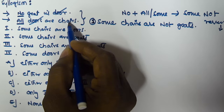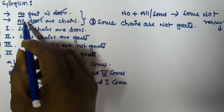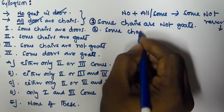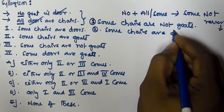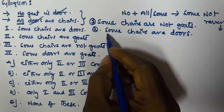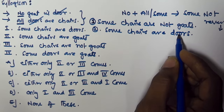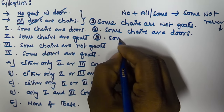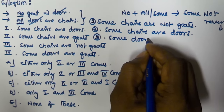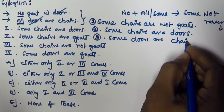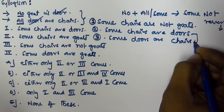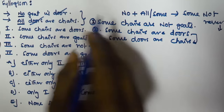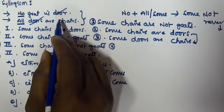From the second statement alone — all doors are chairs — if we interchange chairs and doors, 'all' becomes 'some.' So the second derivation is: some chairs are doors. From that, we can also interchange to get the third derivation: some doors are chairs.